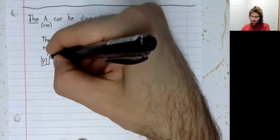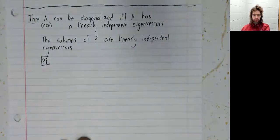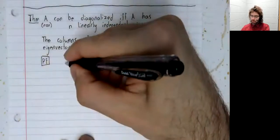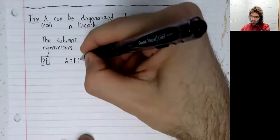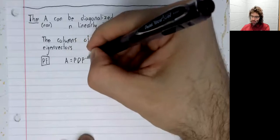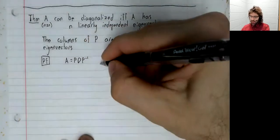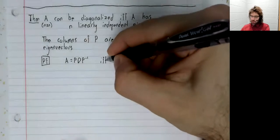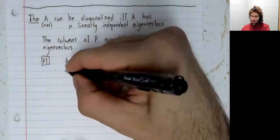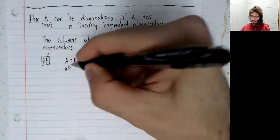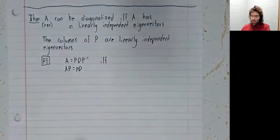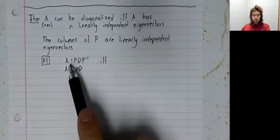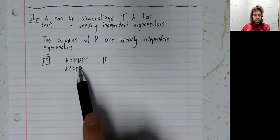And we can give a proof of this theorem. Suppose that A can be diagonalized. Now this equation is true if and only if A P equals P D. If we multiply both sides of this equation by P, we get this.